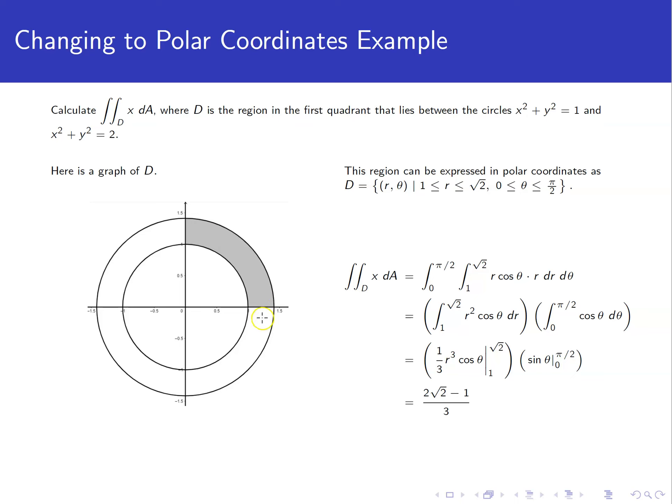However, this region is very easily expressed in polar. Our radius goes from 1 to root 2. Our theta goes from 0 to pi over 2. That's it. This is what's referred to as a polar rectangle in polar coordinates.